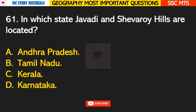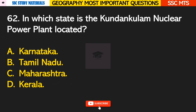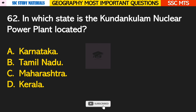Question number 61: in which state are the Javadi and Shevaroy Hills located? Answer B — they are located in the state of Tamil Nadu. Question number 62: in which state is the Kudankulam Nuclear Power Plant located? Answer B — it is located in Tamil Nadu.